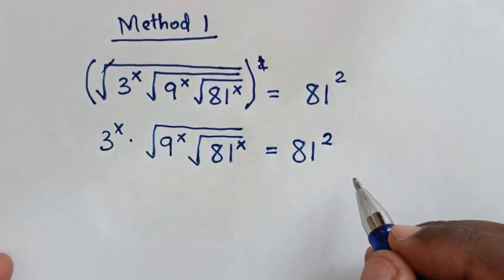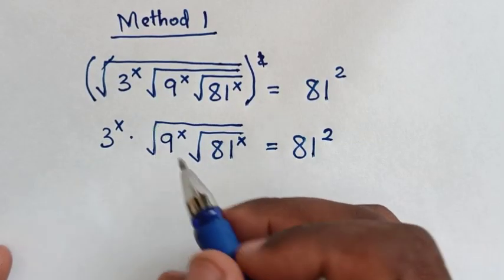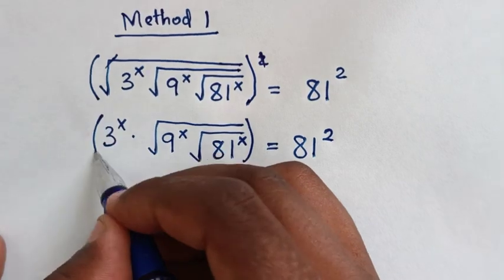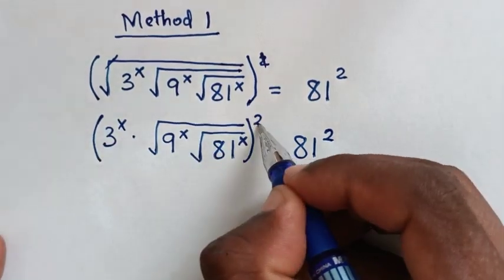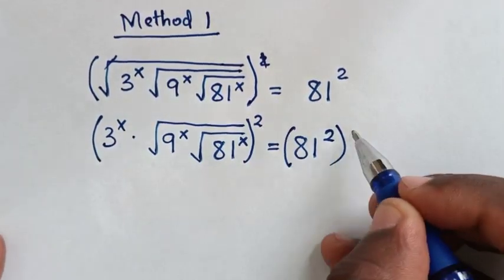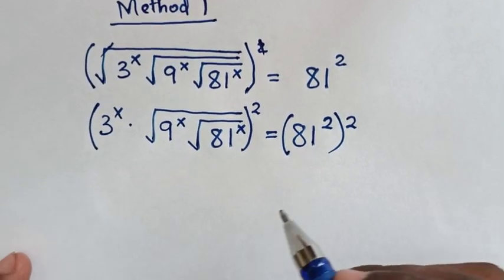Then, in the next step, to remove the second square root, we'll square again in both sides, and into this side we'll square it as well.